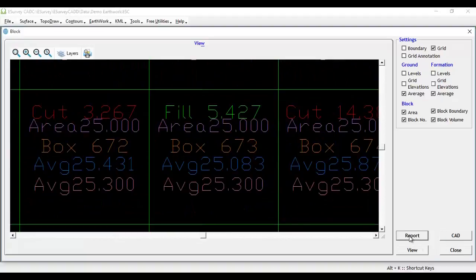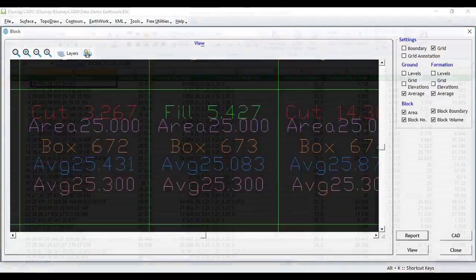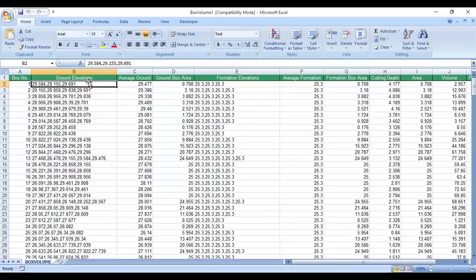The report will have block number, all the initial levels, average, final levels and their average, area of that particular block, and the final volume of that block either in cutting or filling.